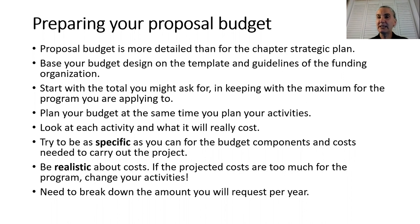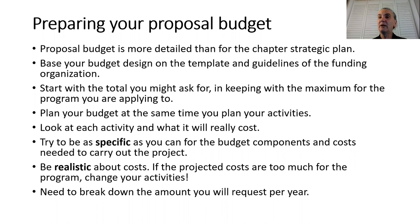Look at each activity and see what it will really cost. Try to be as specific as you can about the budget components and the costs needed to carry out the project. Be realistic about the costs — if the projected costs are too high for the maximum allocated for the funding program, change your activities. You also need to break down the amount you will request per year.